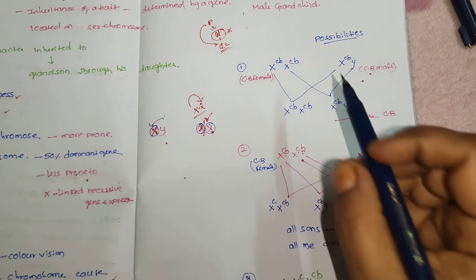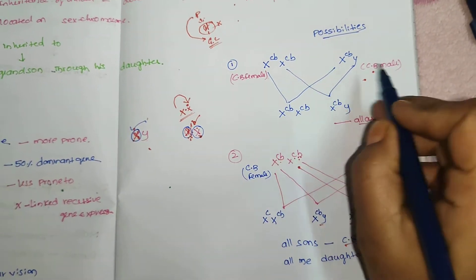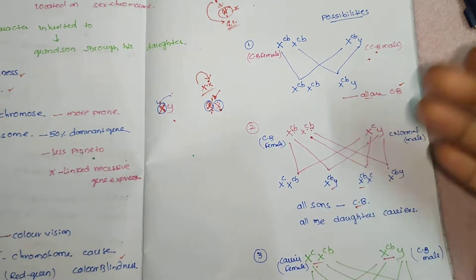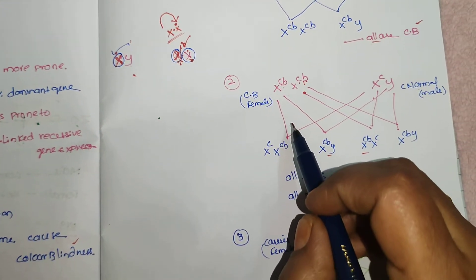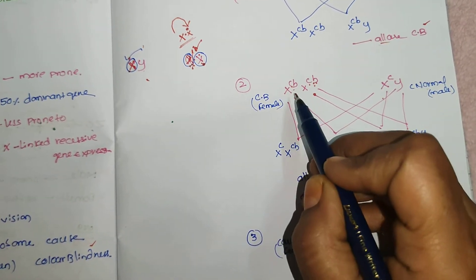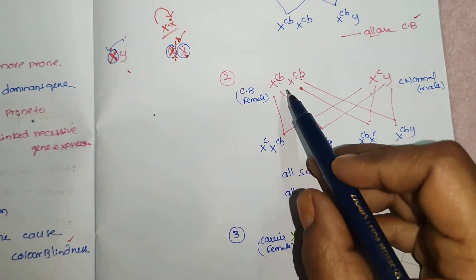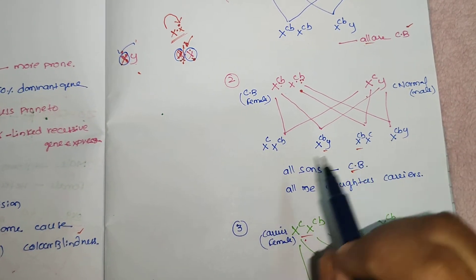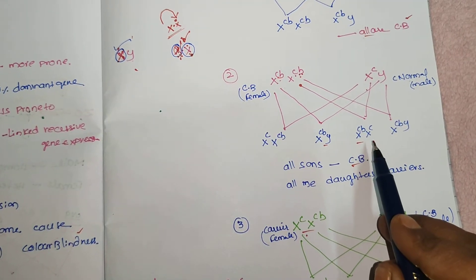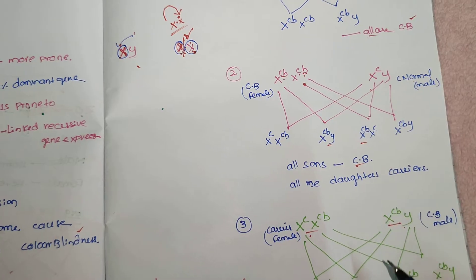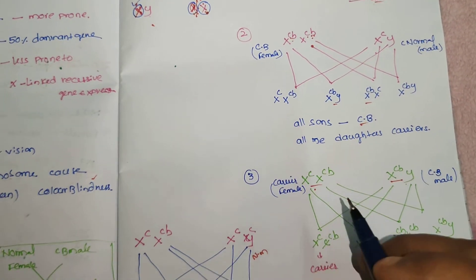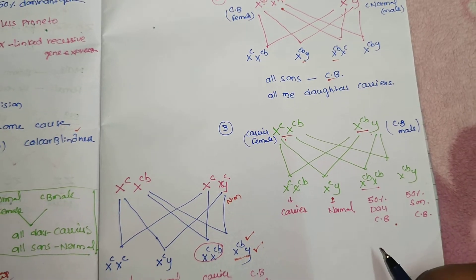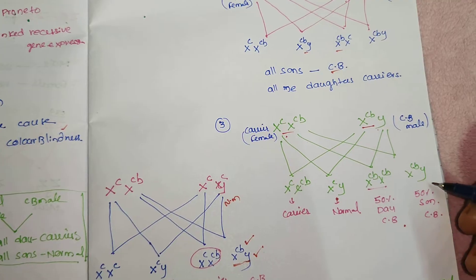Another probability: if both the female and male have color blindness, then all offspring will also be color blind. If a color blind female (CBCB) marries a normal male, all sons are color blind — because the character passes from mother to male child — and all daughters are carriers. Another case: if a carrier female marries a color blind male, then 50% of daughters are color blind and 50% are normal or carrier, and 50% of sons are color blind and 50% are normal.